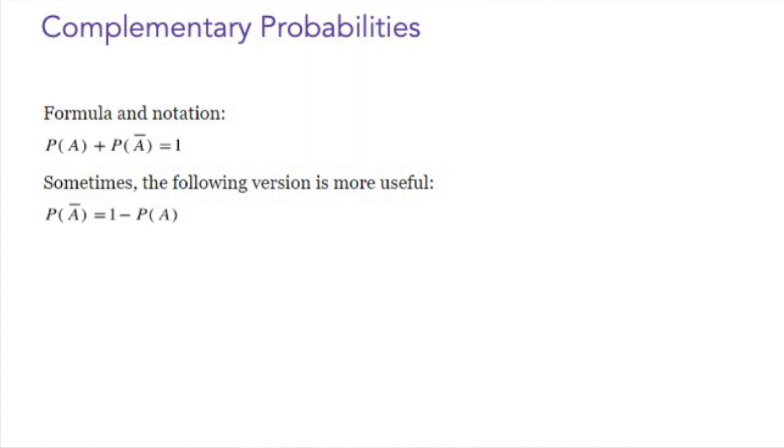Sometimes the following version is more useful. What I did here was I solved this for the probability of A complement with the little line over it. So the probability of A complement, or A not occurring, is one minus the probability of A occurring.